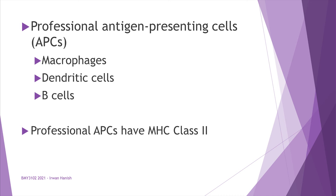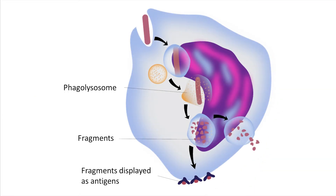Now, how do T and B cells get to see antigens? The antigens are presented to them by a group of cells called professional antigen-presenting cells, or professional APCs. A quick way to identify professional APCs is that they possess MHC class II. Examples include macrophages, dendritic cells, and B cells.